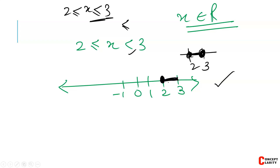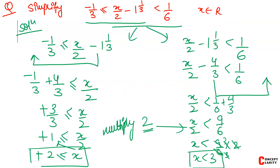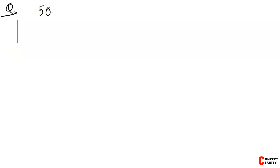Now let's start with another new question. Students often get confused by number line questions, so pay attention. The question is: 5 times (2x minus 5) is less than 25. We have been told that x belongs to the whole numbers. We have to solve it and represent the solution on the number line.